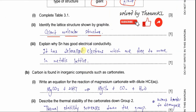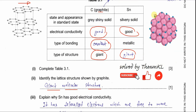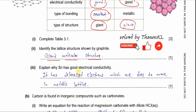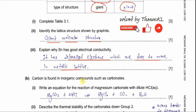Part three: explain why tin has good electrical conductivity. Tin has delocalized electrons which can carry charge and freely move within the metallic lattice. Therefore, tin is a good electrical conductor.